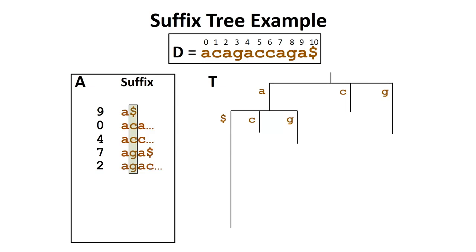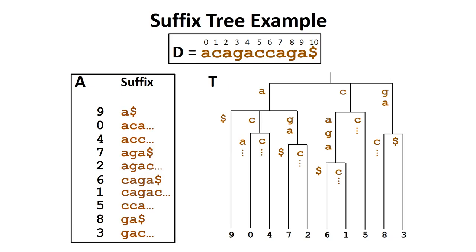When we reach the dollar sign, we will record the position in the leaf of the tree. In this case, we will record the position 9 for the suffix a dollar sign. We can repeat this process to construct the rest of the subtree for the suffixes that begin with an a. Similarly, we can repeat this process to construct the subtrees for the suffixes that begin with a c or a g.